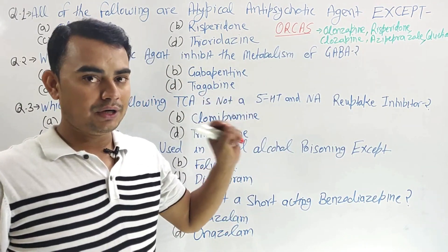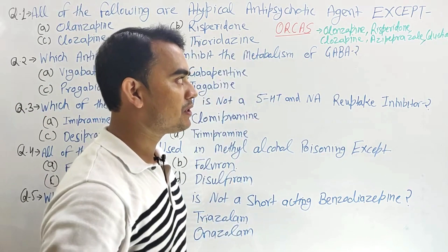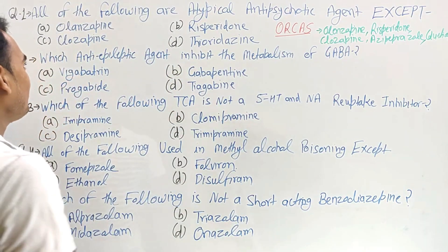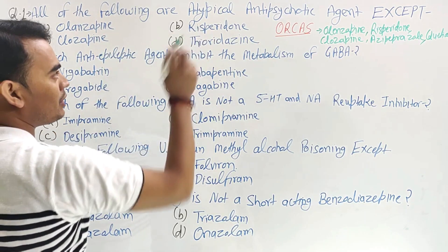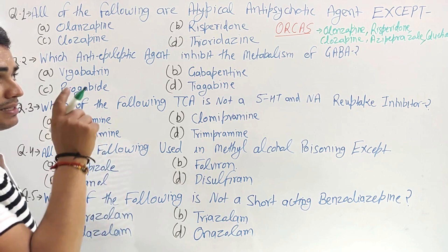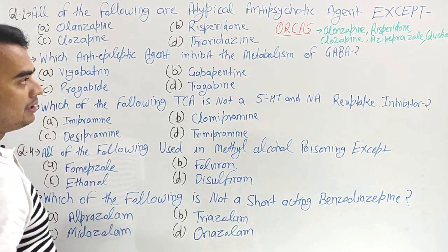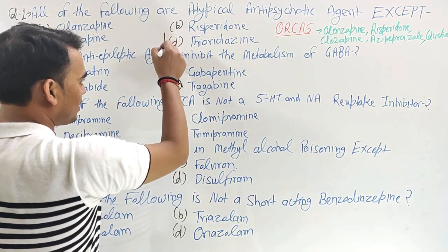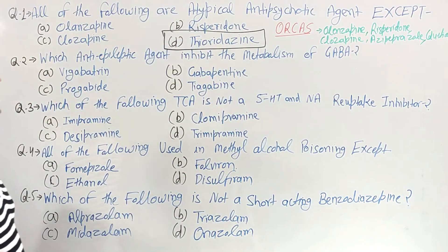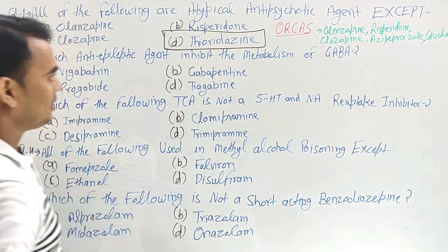These are very important atypical antipsychotics: olanzapine, risperidone, clozapine, aripiprazole, and quetiapine. Now check the options — olanzapine: atypical. Risperidone: atypical. Clozapine: yes. Thioridazine — thioridazine is NOT an atypical antipsychotic. It is a typical antipsychotic. So thioridazine is our correct answer for the 'except' question.